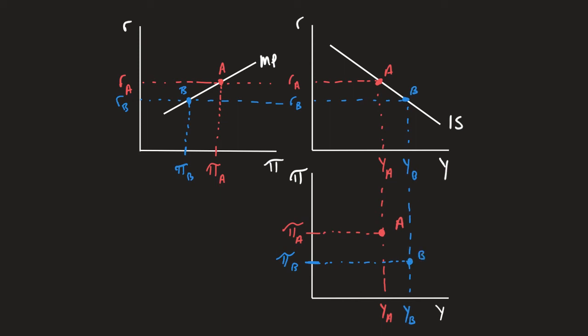Now we can do one more point. Let's say we had a higher level of inflation. Well, this higher level of inflation looks over here on the MP curve, which that higher level of inflation would lead to a higher level of the real interest rate targeted by the central bank.